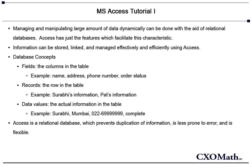Let's begin with understanding database terminology. A table is a collection of information organized into fields, records, and data values. Fields are essentially columns in the table. For example, a particular table can have name, address, phone number, and order status.